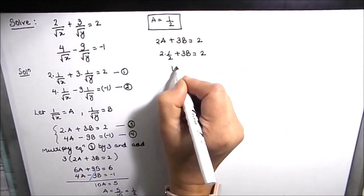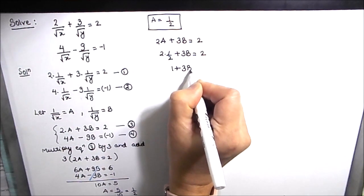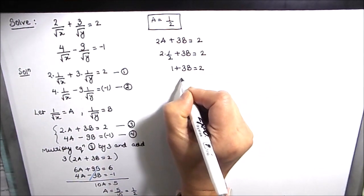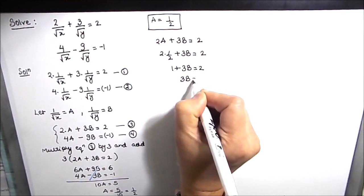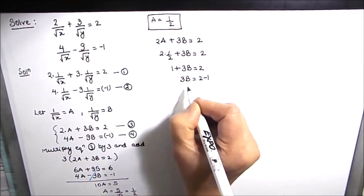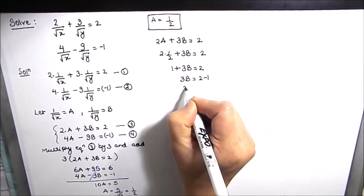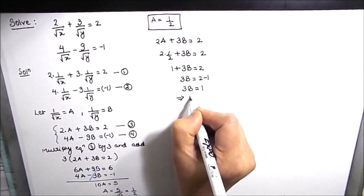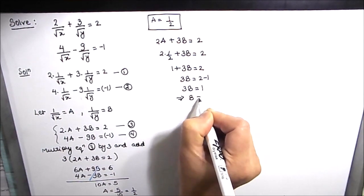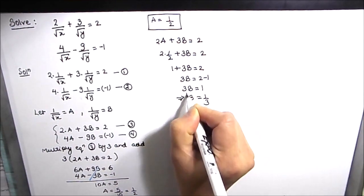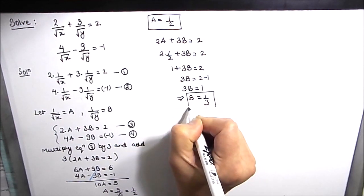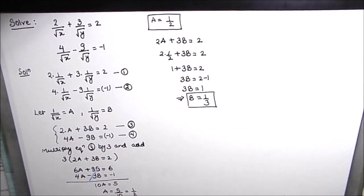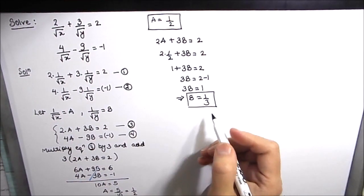This gives us 1 plus 3B is equal to 2, so 3B is equal to 2 minus 1, which gives us 3B equals 1, and therefore B equals 1/3. So the value of A is 1/2 and B is 1/3.